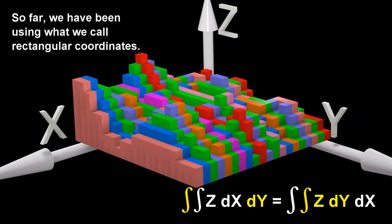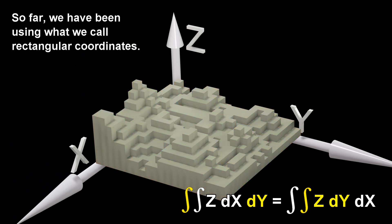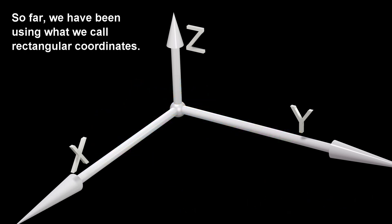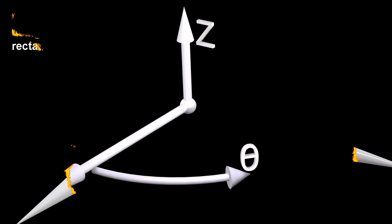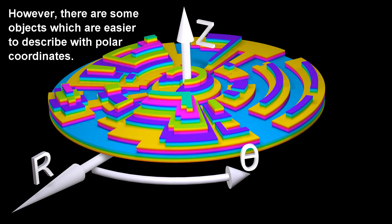So far, we have been using what we call Rectangular Coordinates. However, there are some objects which are easier to describe with Polar Coordinates.